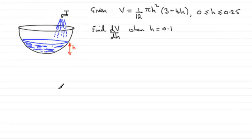Now, in this question, we're given this hemispherical hollow bowl and it's being filled with water. We're told that when its height is h, the volume V in cubic meters is given by this formula here: (1/12)πh²(3 - 4h), for h greater than or equal to 0 but less than or equal to 0.25.